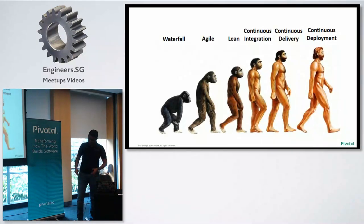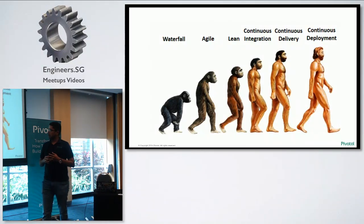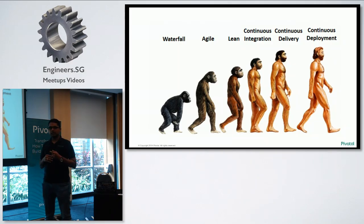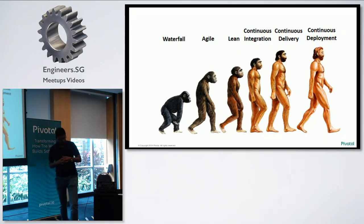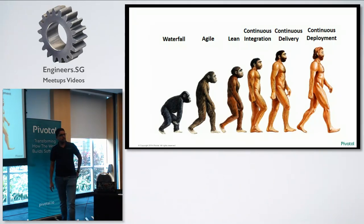Historically, we all started with waterfall methodology, then moved into agile practices, then lean practices. As we started getting more mature, we started looking at CI/CD and ultimately continuous deployment. Who here is doing CI/CD, continuous deployment? Very few. Going back to consumer-grade companies like Amazon and Netflix — these guys push release code to production every few minutes, several times in a day.